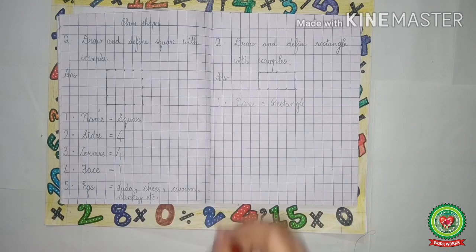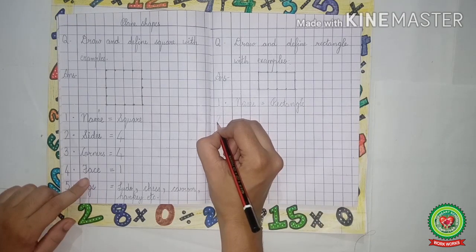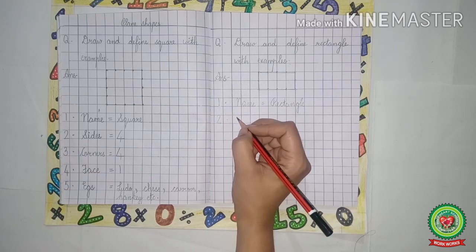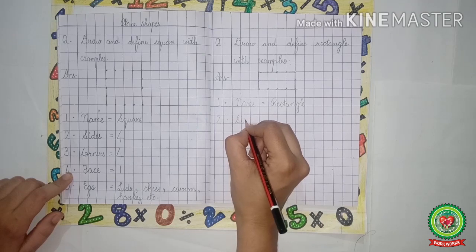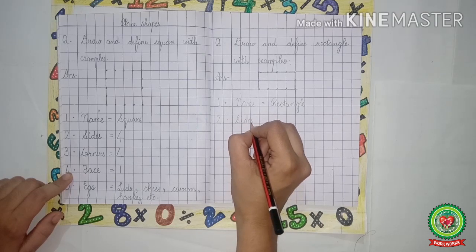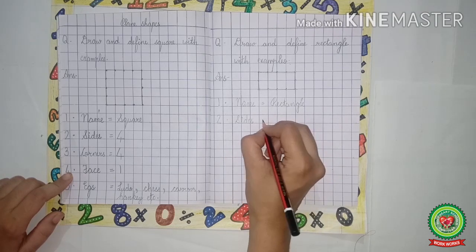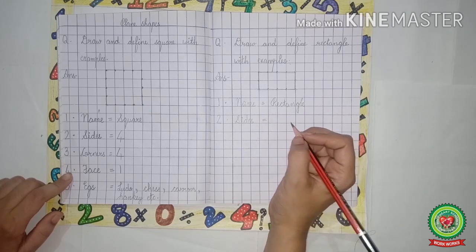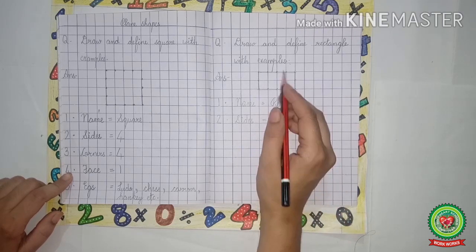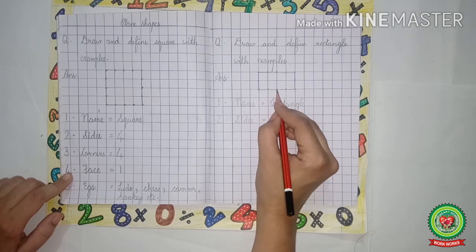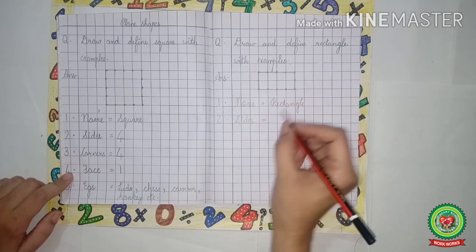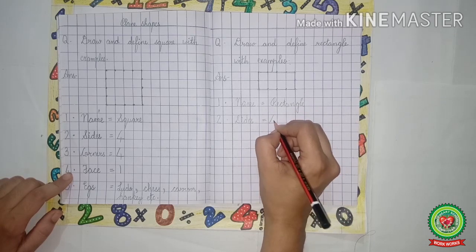Now leave one line, two dot. Sides, S-I-D-E-S, sides. Equals to. Now we will count how many sides rectangle has. One, two, three, four. So we will write four.